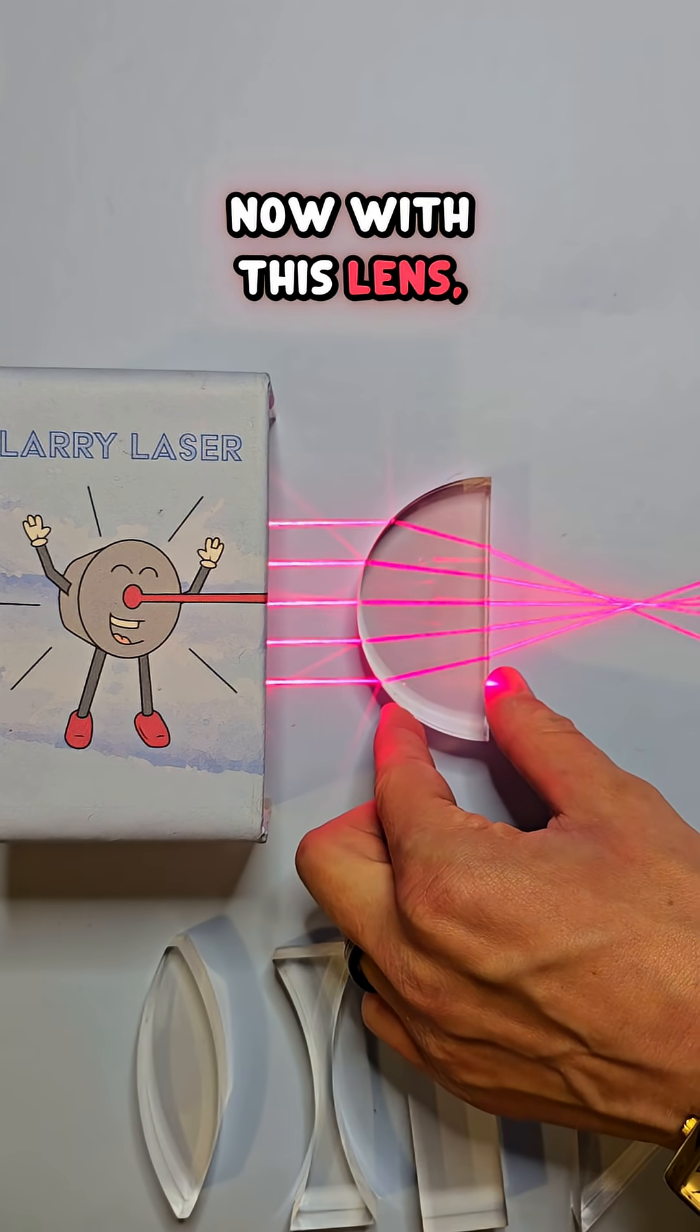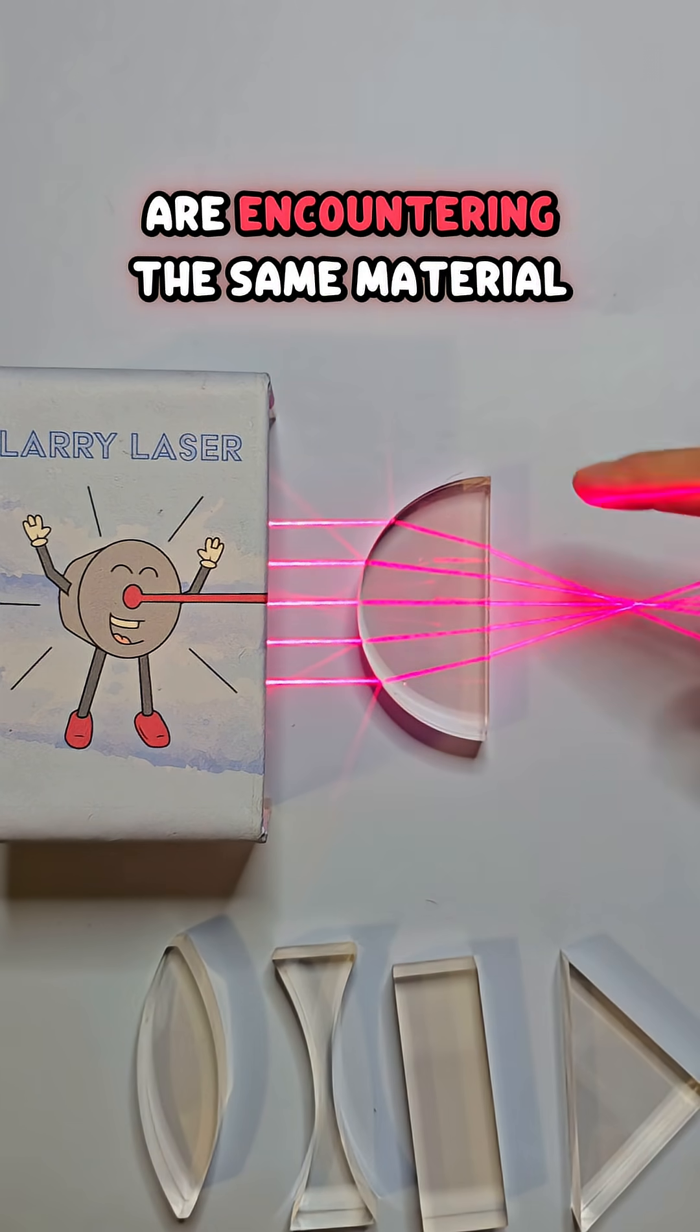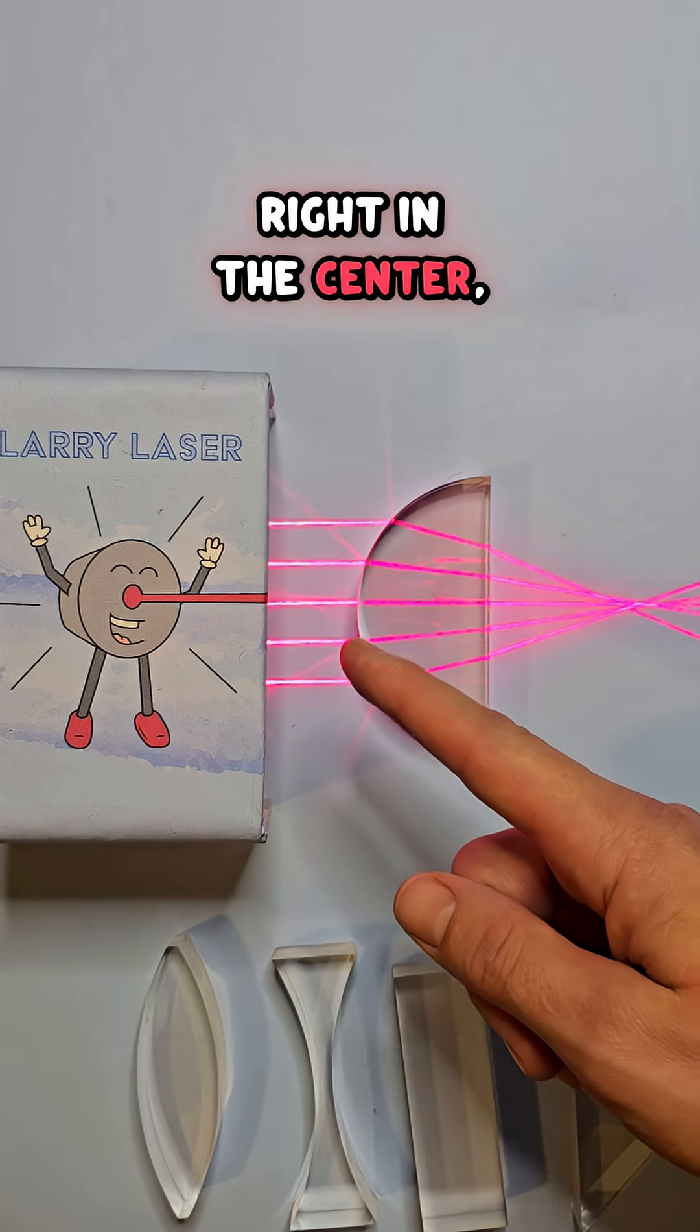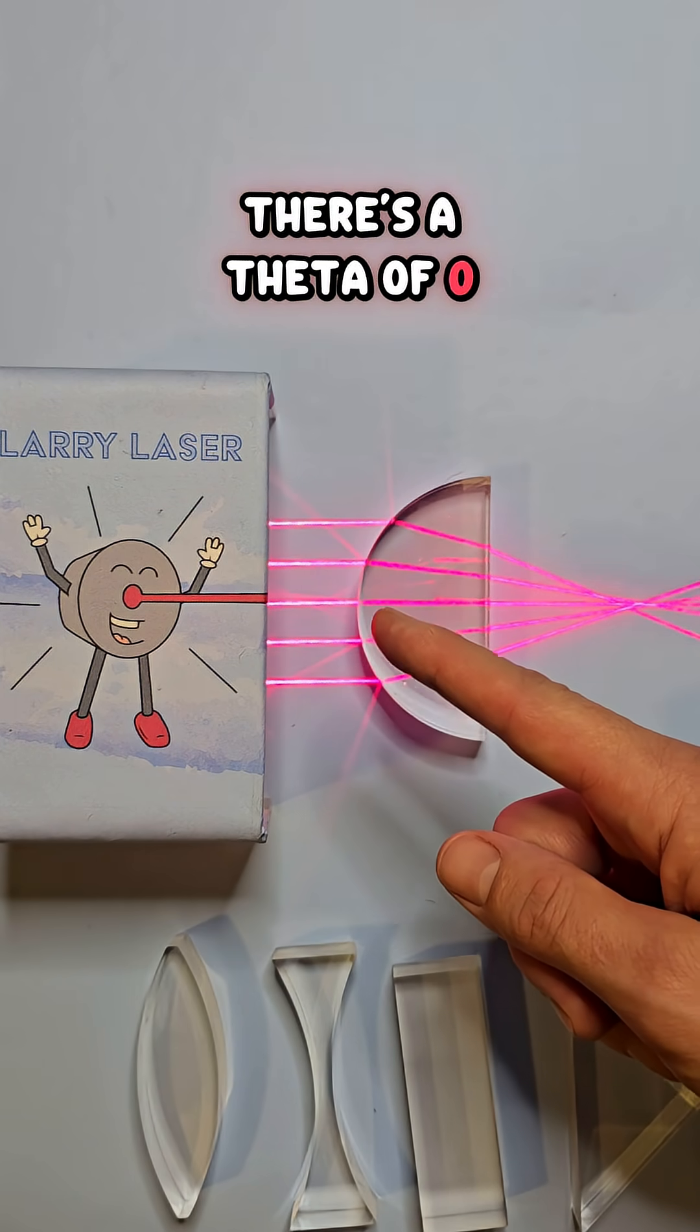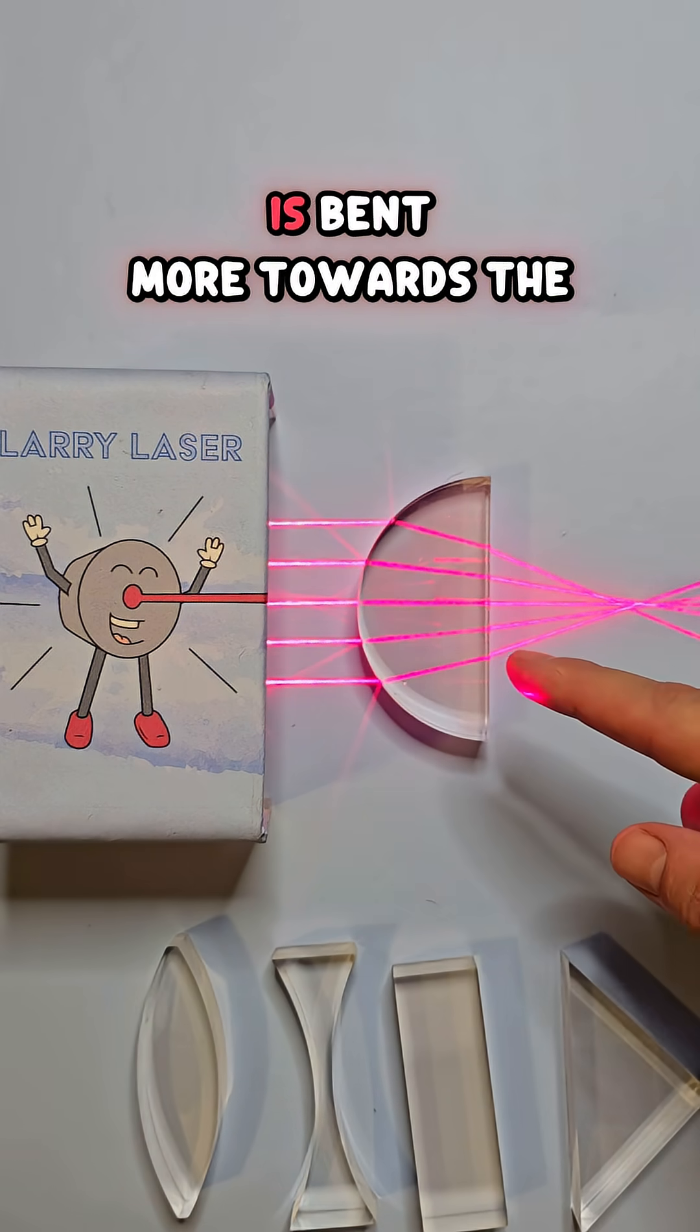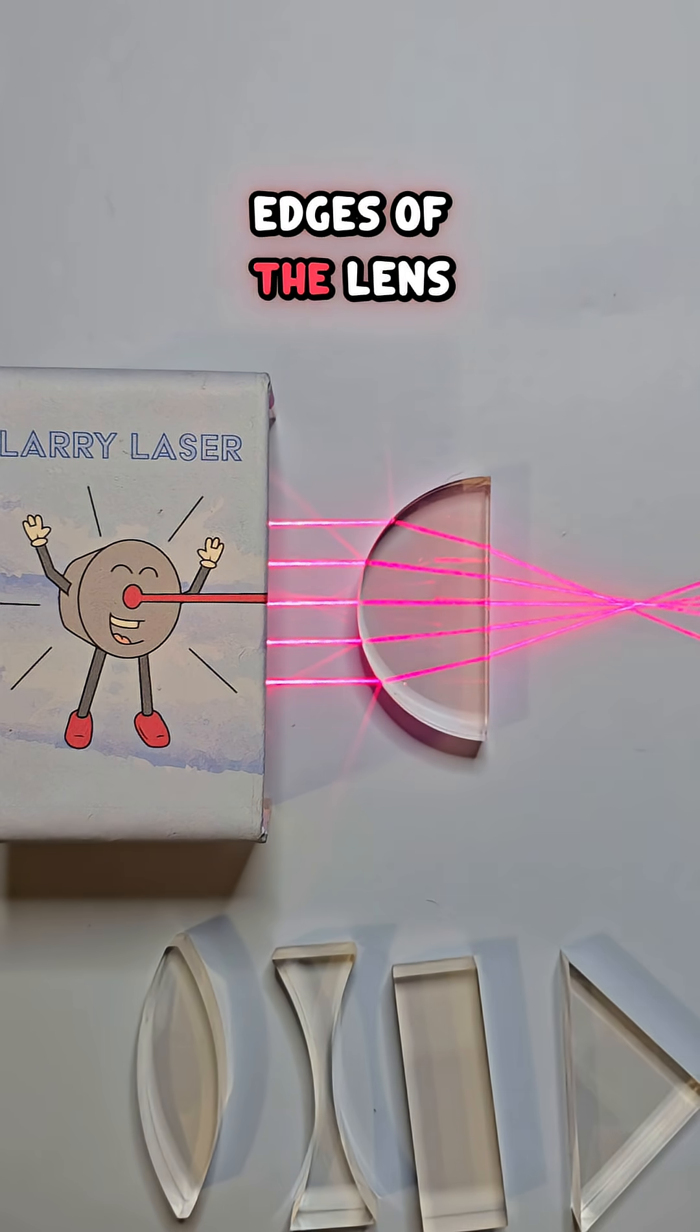Now with this lens, all of the light lines are encountering the same material, the same kind of glass, but their angle is different. Right in the center, there's a theta of 0, but that theta 1 is increasing as you get closer to the edge, which is why the light is bent more towards the edges of the lens.